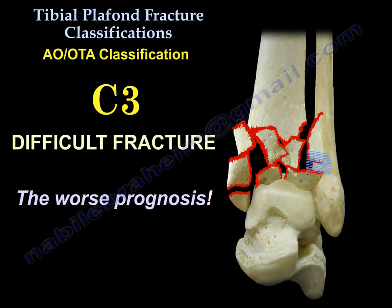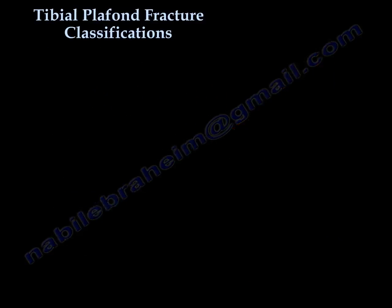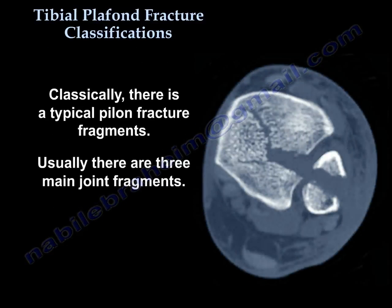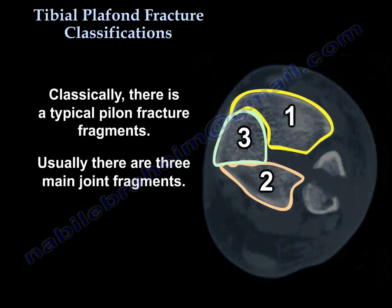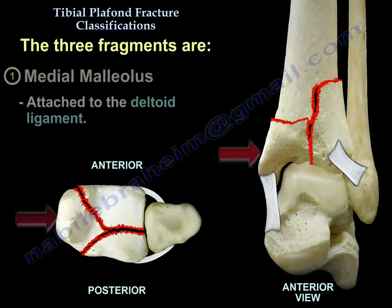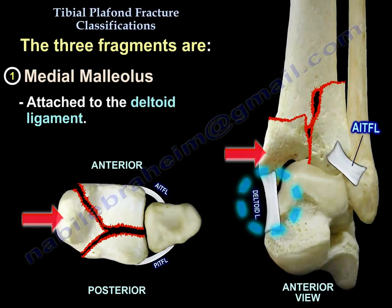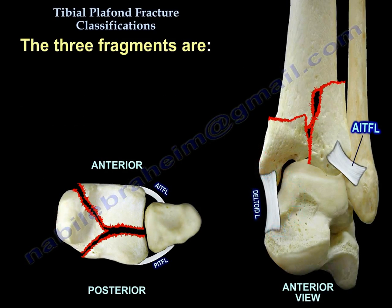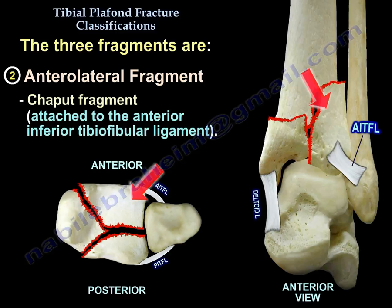Classically, there are three main joint fragments in a typical pylon fracture. The first is the medial malleolus, which is attached to the deltoid ligament. The second is the anterolateral fragment, called the Chaput fragment, which is attached to the anterior inferior tibiofibular ligament.